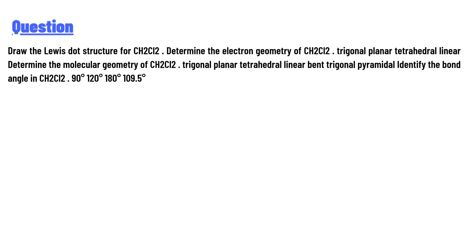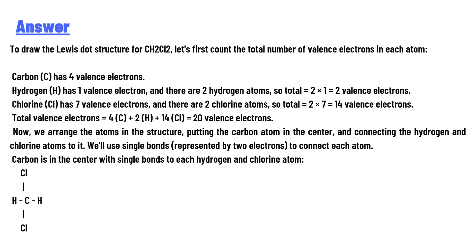The bond angle options are: 90°, 120°, 180°, or 109.5°. To answer this question and draw the Lewis dot structure of CH2Cl2, let's